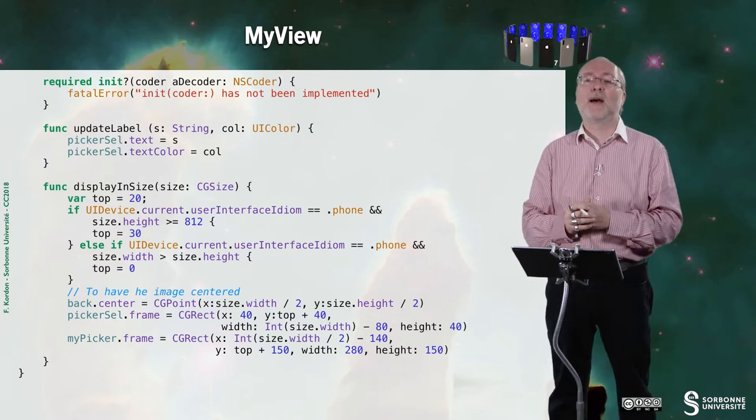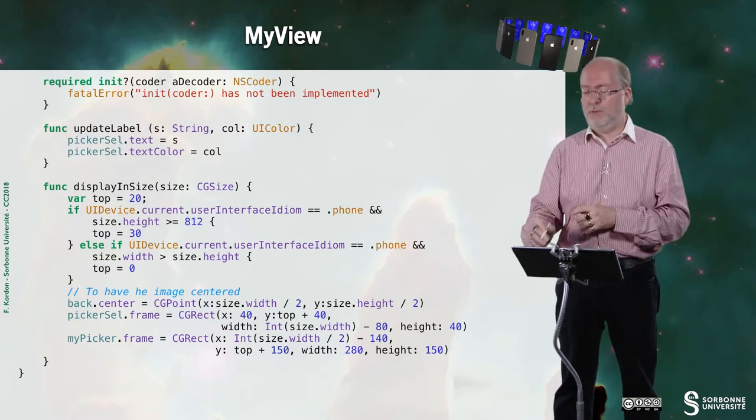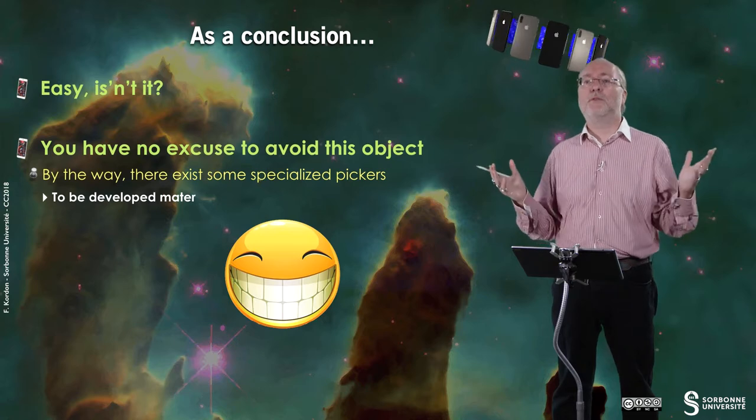So this is the function updateLabel that is invoked by the controller. And here this is the displayInSize. I don't comment it because you already know how it works. So that's all.